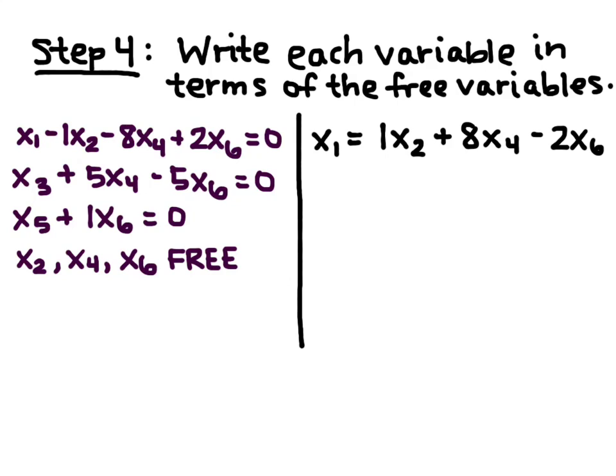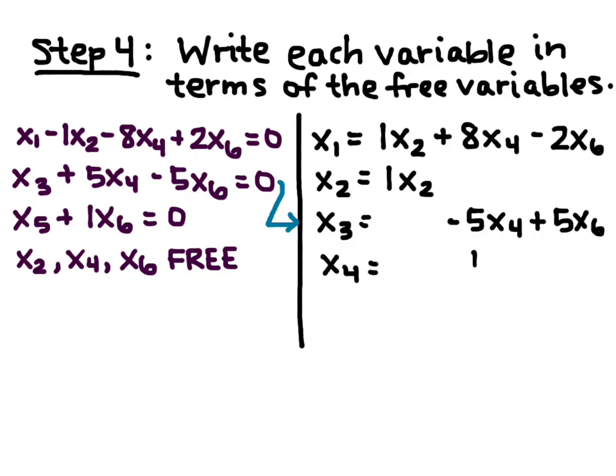X2 is free, so I'm just going to set it equal to itself: X2 equals 1X2. From my second equation involving X3, I get X3 equals negative 5X4 plus 5X6. Notice that I'm lining up the free variables in columns. X4 is free, so I'm setting it equal to itself: X4 equals 1X4, and I line it up in the X4 column.